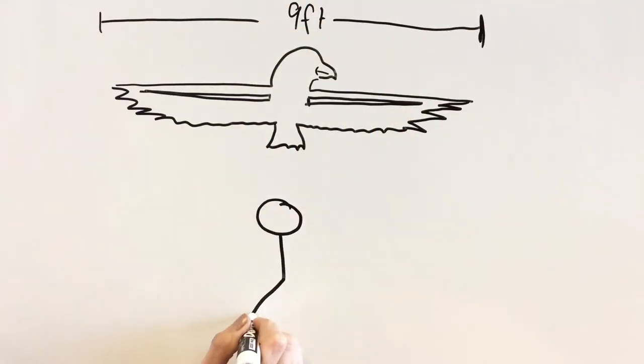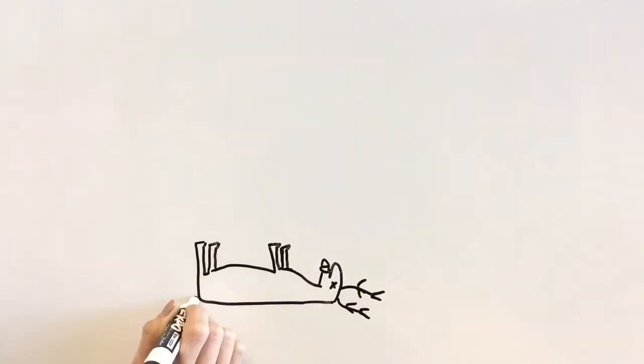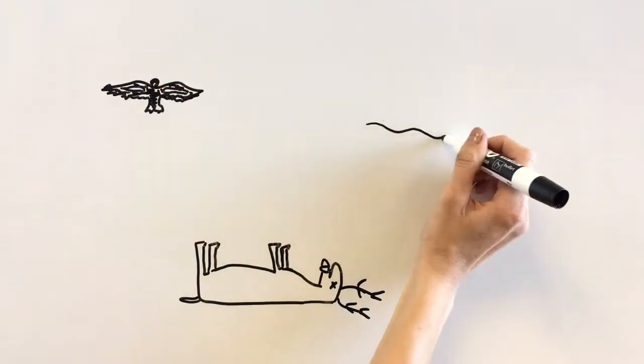With a wingspan of 9 feet, these birds are not only impressive, but they're also important to the ecosystem. Condors are scavengers who eat dead animals before they decompose and start spreading disease.